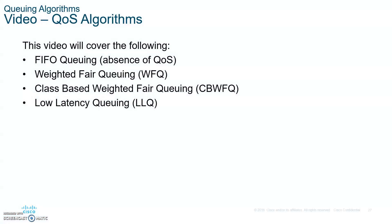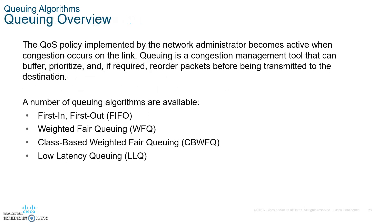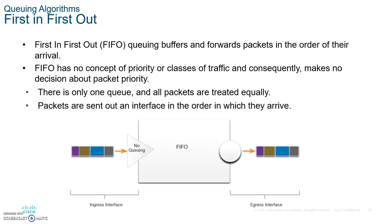Let's take a look at the queuing algorithms. There are four you should know. First is FIFO — First In, First Out. It uses one queue, one buffer, and forwards packets in the order they arrive: first come, first served. There's really no priority with FIFO. Switches use FIFO to allow 100 megabits to connect to 100 megabits, or 1,000 megabits to connect to 100-megabit ports, and so on.